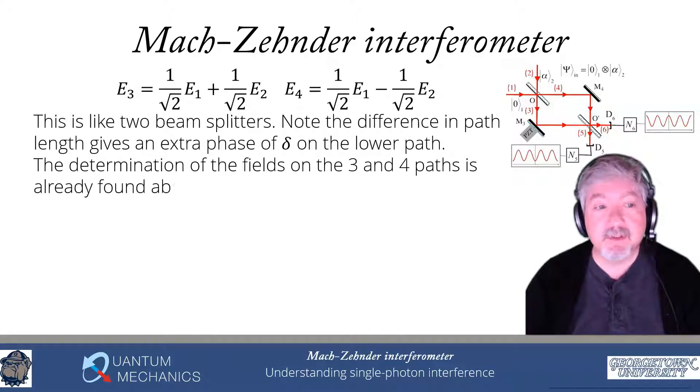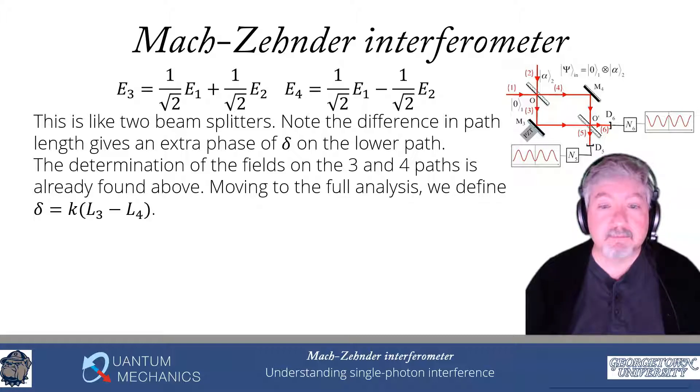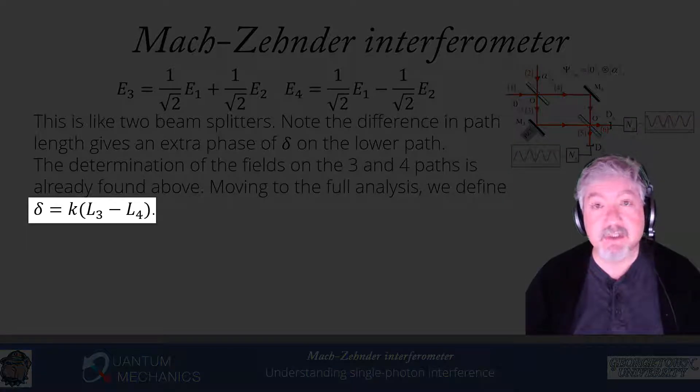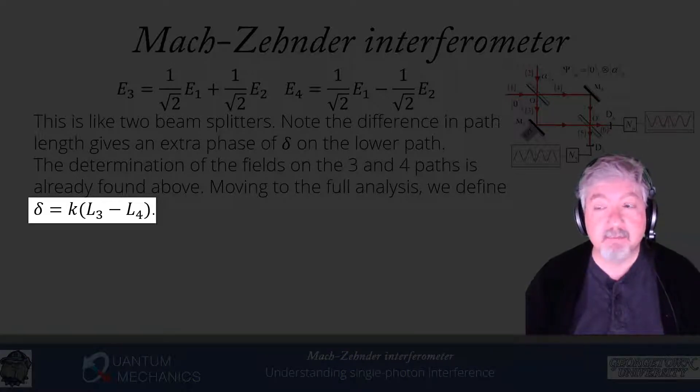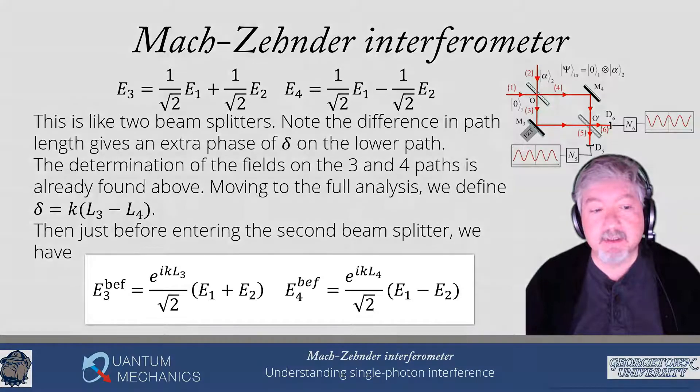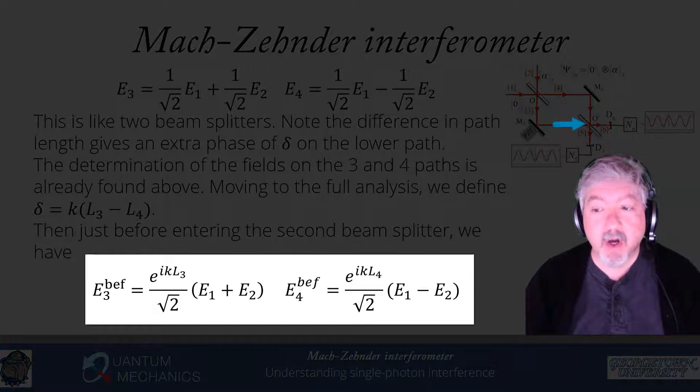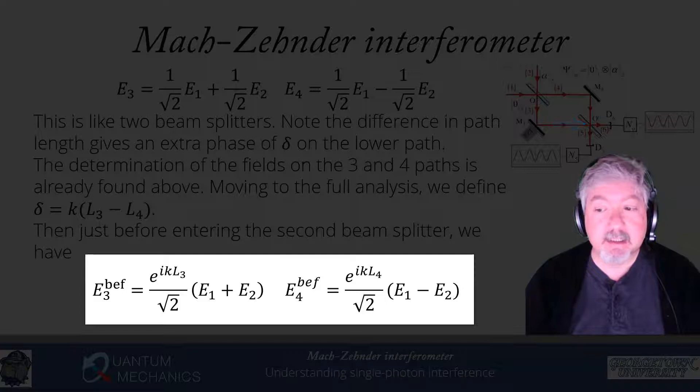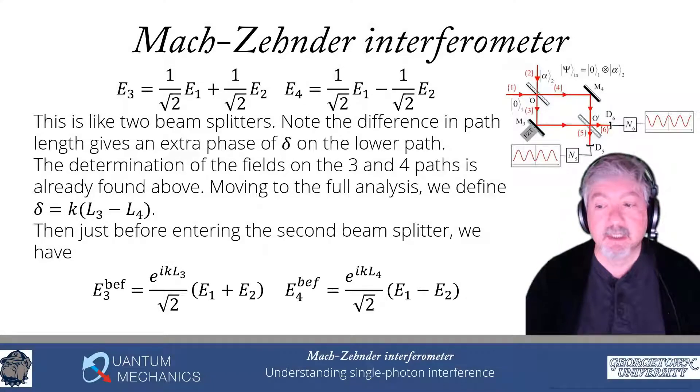The determinations of the fields have already been done by doing the beam splitter. We're going to be defining the path difference delta, which is just a number, to be k, the wave vector of the monochromatic light that I'm shining onto the Mach-Zehnder interferometer, multiplied by the difference L3 minus L4. Then just before we enter the second beam splitter, the electric fields in the 3-port, which is the horizontal port entering the beam splitter, has a representation given by e to the i k L3 over square root of 2 times E1 plus E2. And E4, which is the port coming in from the vertical direction, is e to the i k L4 over square root of 2 times E1 minus E2, the minus sign coming from that adding of 6 hours on the second port as it goes through into the fourth port.